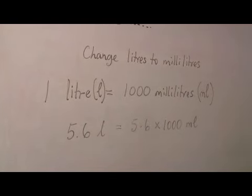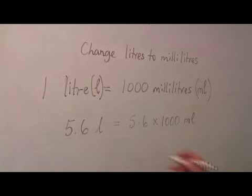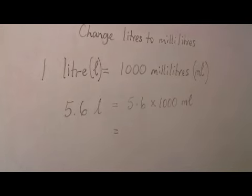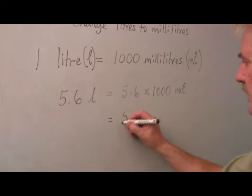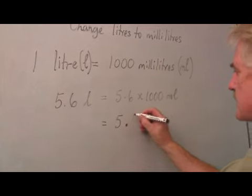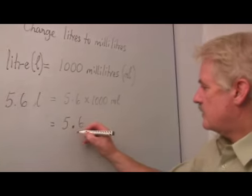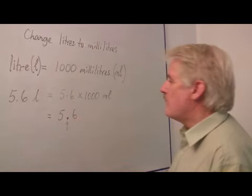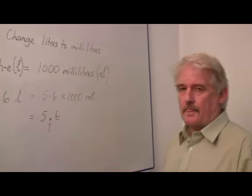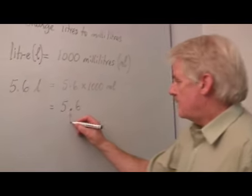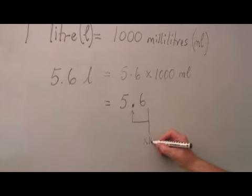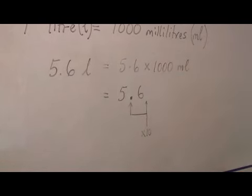Now 5.6 times a thousand is best done by simply moving the decimal place. If I write 5.6 there and look at this decimal place here I know that if I multiply a number by ten I simply move the decimal point one place to the right.